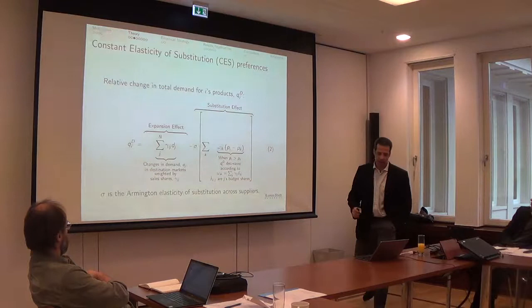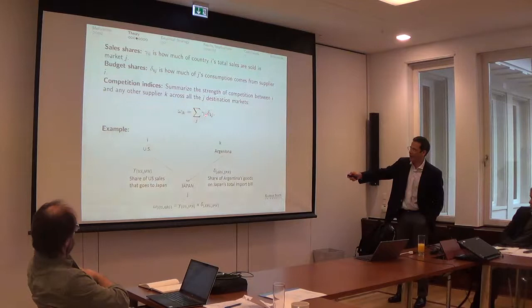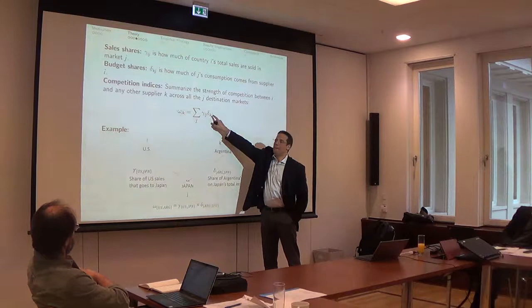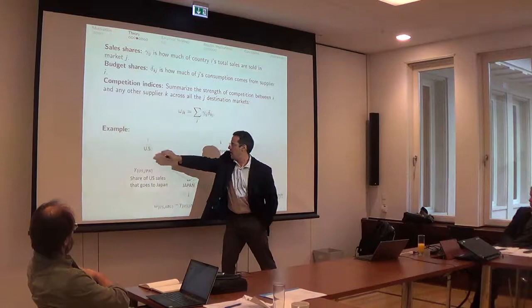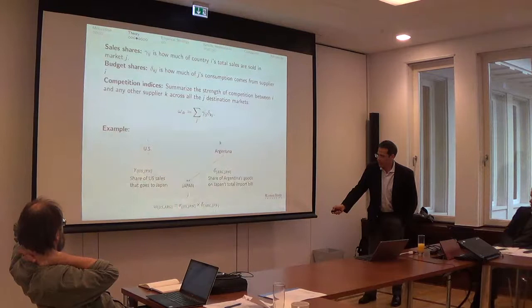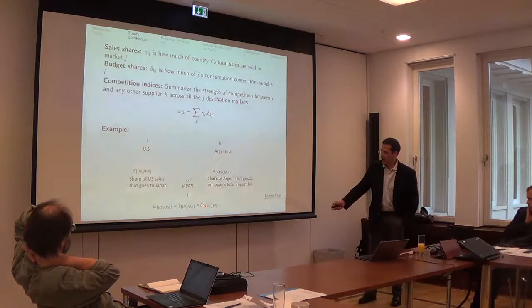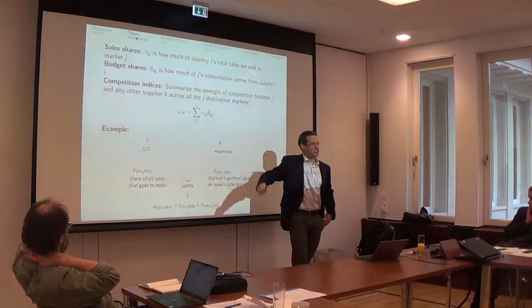This omega ik, let me show you what this is so I don't get too confused. It's a product of those sales shares of what country i sells in market j times the budget share of what country j buys from another country k. So let's fix ideas. i is the US, k is Argentina. They both compete in the Japanese market.